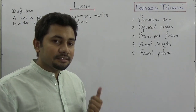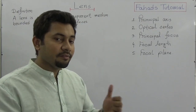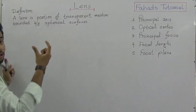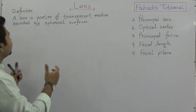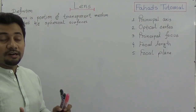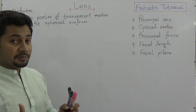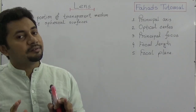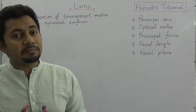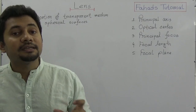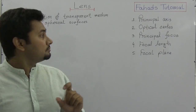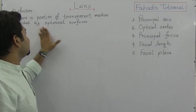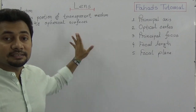So what is the definition of lens? We can say that the lens is a portion of transparent medium — a portion of a transparent medium bounded by two spherical surfaces.